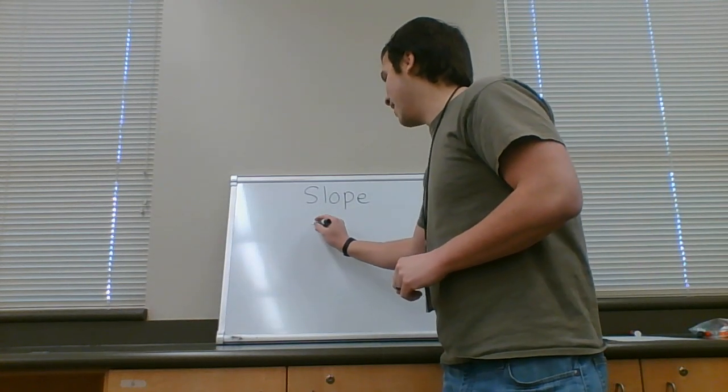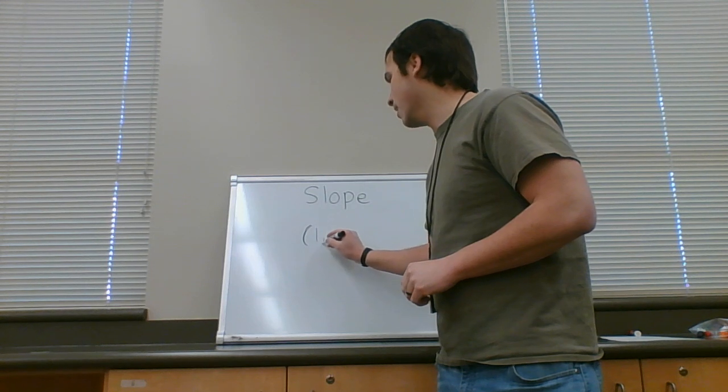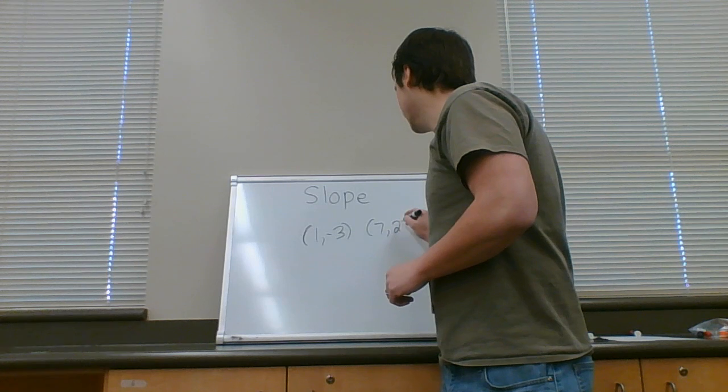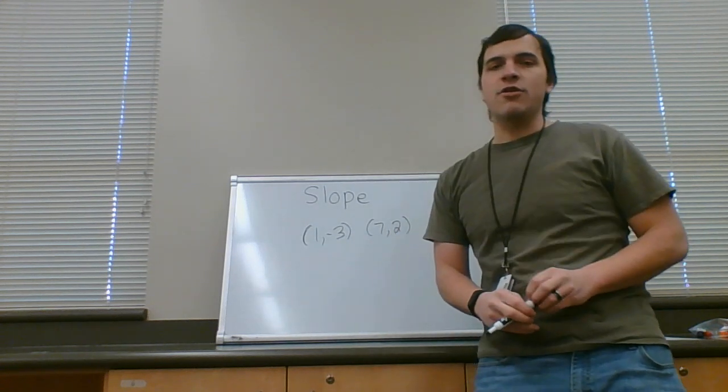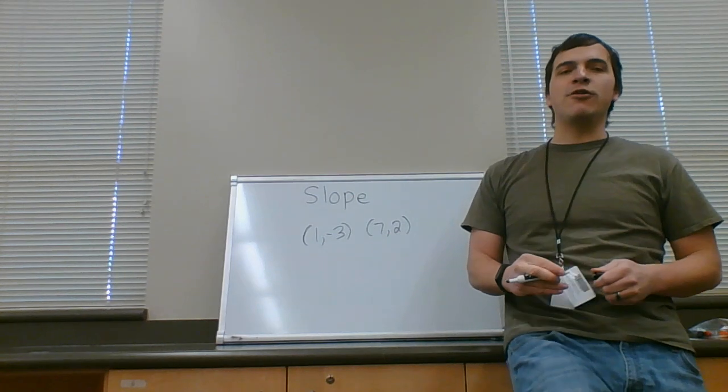Suppose I have a linear equation, a line that involves the points (1, -3) and (7, 2). All right, so for this kind of problem, we are going to find the slope between these two points.